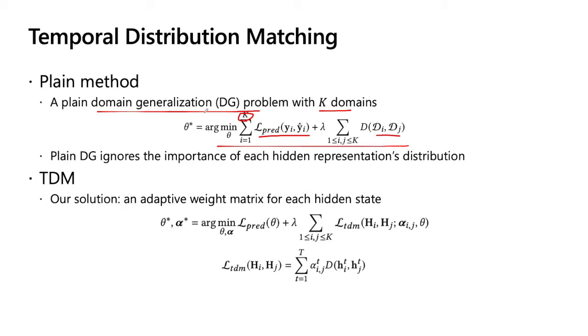This is a rather popular domain generalization problem. But we figured that plain DG ignores the importance of each hidden representation's distribution. So, we propose TDM in an RNN. Note that the RNN have so many hidden state representations, which are of great importance to our RNN modeling. So, we need to learn an adaptive weight matrix for each hidden state. In here, it is a matrix alpha. We call that alpha is an adaptive weight matrix. So, we can use it to learn the importance between hidden states hi and hj. And then, we can formulate it as an adaptive weighted version of this formula.